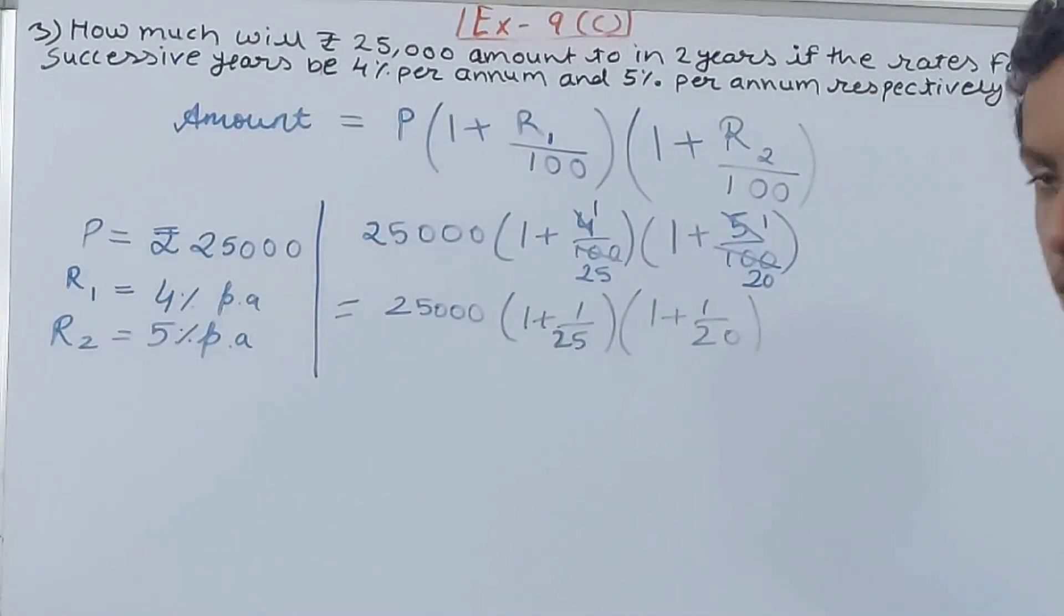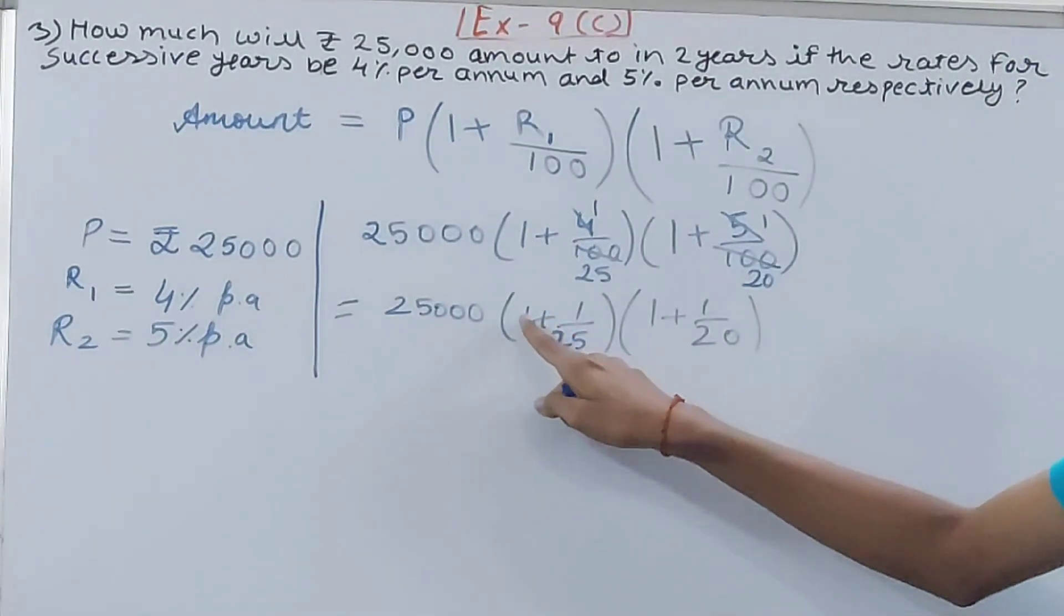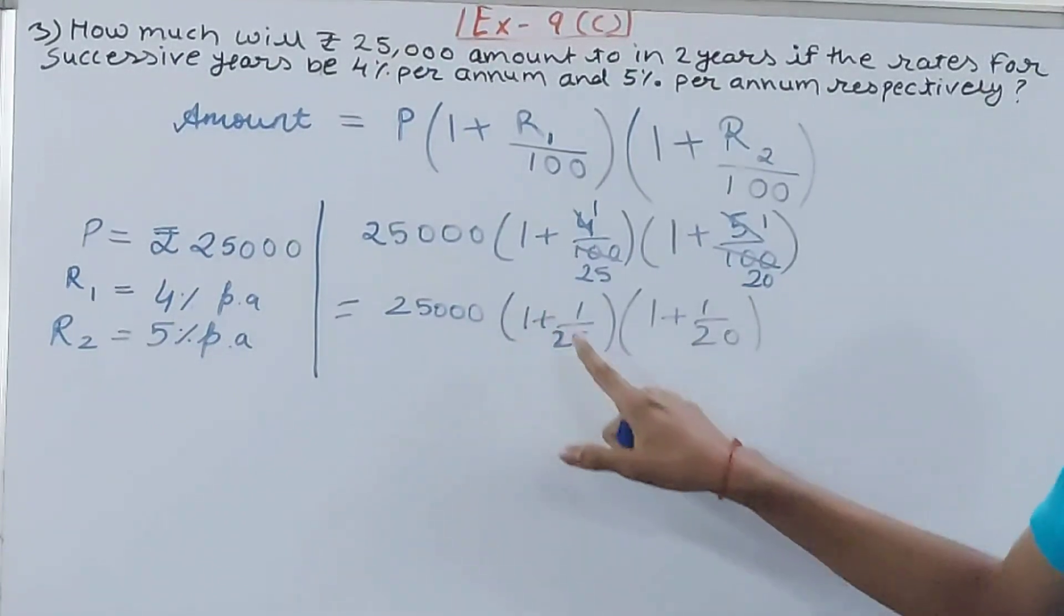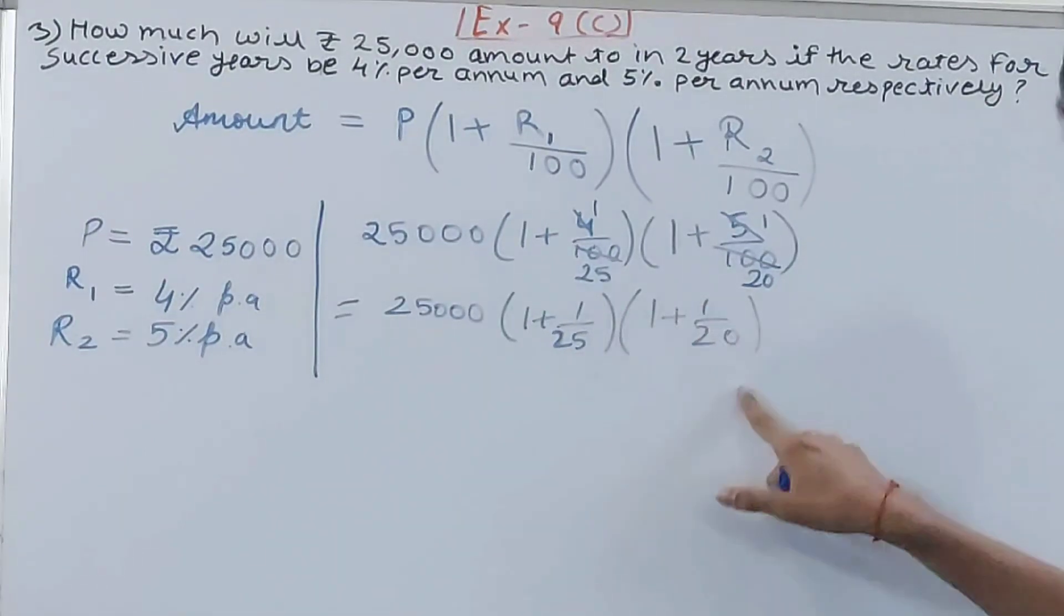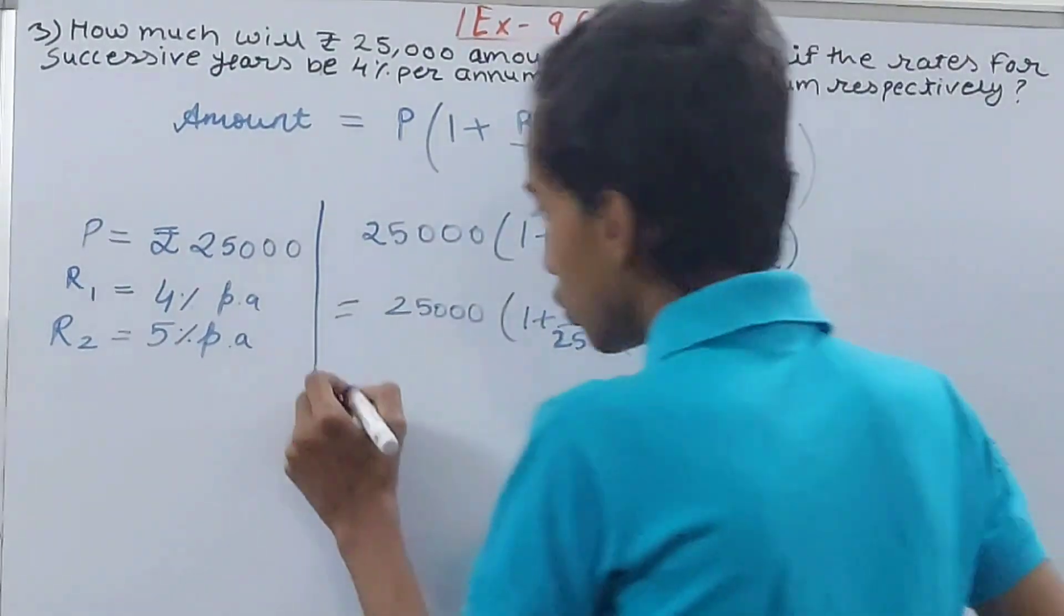So you will have 25,000 × (25+1, that is 26/25). The denominator will not change, it will stay as it is. Only this 1 will become this denominator - that is, 1 becomes 25, so 25+1 has given me 26. Same for here: 1 will become 20, so 20+1 is 21/20. Now you can open